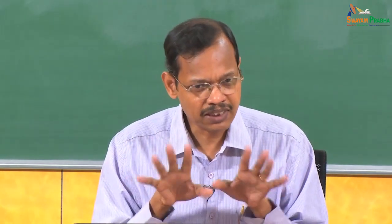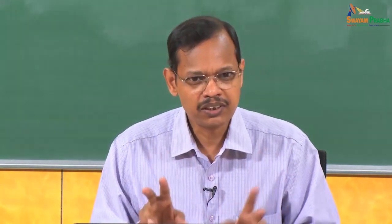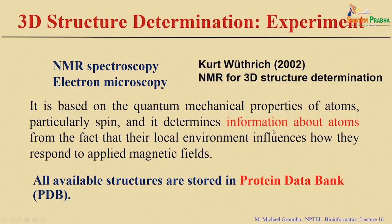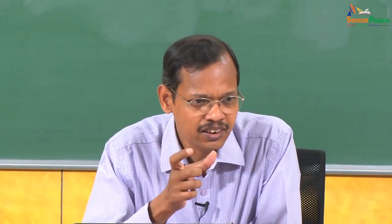X-ray crystallography is the major technique used to determine 3D structures of protein molecules and other biological macromolecules. NMR spectroscopy and electron microscopy are also used. NMR spectroscopy is based on the quantum mechanical properties of atoms like spin, which determines information about the atoms and their local environment in response to a magnetic field, using distance constraints in the NMR spectra to develop structural models.